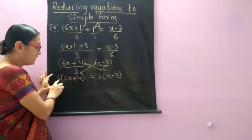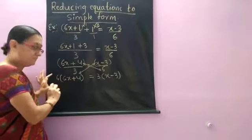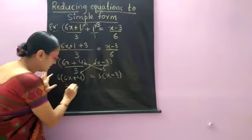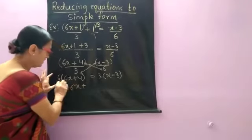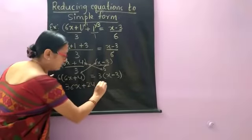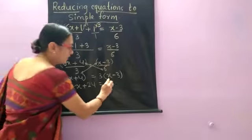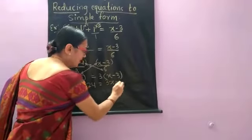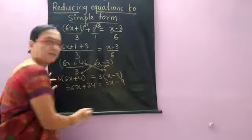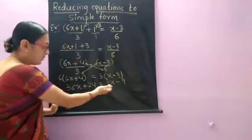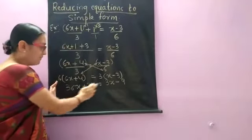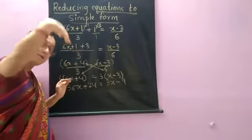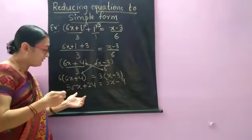Now this 6 has to be multiplied with both the terms inside. 6 times 6x are 36x plus 6 times 4 is 24 equal to 3 times 1 is 3x minus 3 times 3 is 9 here. Now equations having variables on both the sides came to the previous part now.